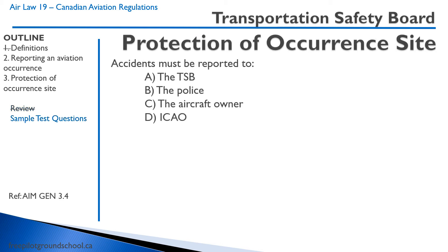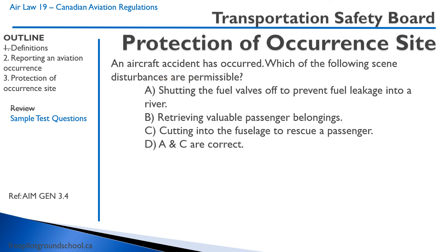Accidents must be reported to: A, the Transportation Safety Board; B, the Police; C, the Aircraft Owner; D, ICAO. Well, considering this is titled Transportation Safety Board, the answer is A, although the aircraft owner probably wants to know too if you just smashed up his airplane. An aircraft accident has occurred — which of the following scene disturbances are permissible? A, shutting the fuel valves off to prevent fuel leakage into a river — yes, that's protecting the environment, so that would be correct. B, retrieving valuable passenger belongings — no. C, cutting into the fuselage to rescue a passenger — yes, that falls under preserving life. So A and C are both correct, making D the right answer.